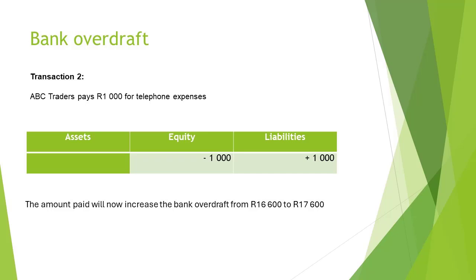The bank overdraft, or in other words, the total the business owes to the bank, will increase from 16,600 Rand to 17,600 Rand. Therefore, after the transaction, the business owes more money to the bank.